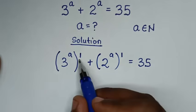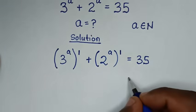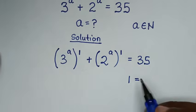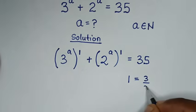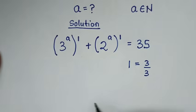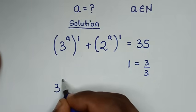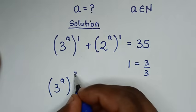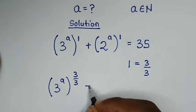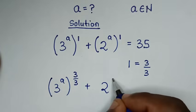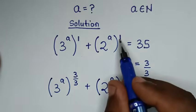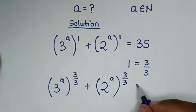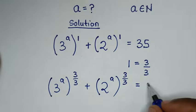Into this 1 and this 1 outside the bracket, we make 1 equal to 3 over 3, because here we have 3 power of a. So our equation will be 3 power of a, then bracket power of 1, we substitute which is 3 over 3, plus 2 power of a, bracket power of 1, we substitute which is 3 over 3, which is equal to 35.